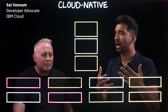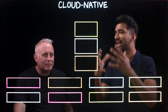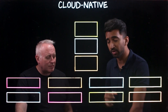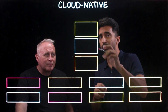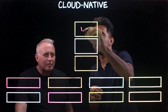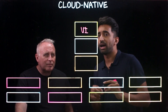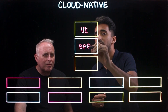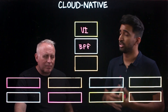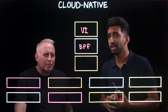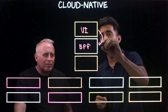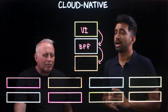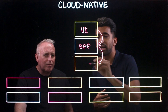I want to start by laying out an example cloud-native application. Let's start with the front-end — we'll call this the UI portion. Below that, we've got the BFF, or backend for frontend, which is serving the APIs for the UI to serve up information. The UI accesses the BFF, and that in turn accesses the microservice or backend layer.